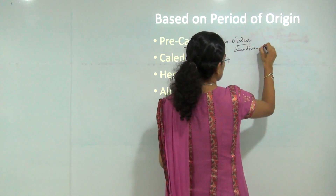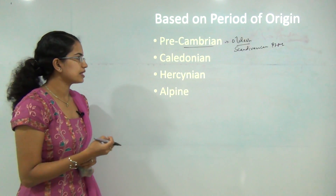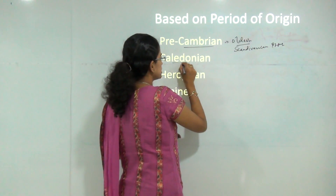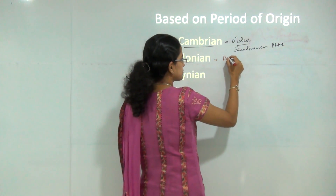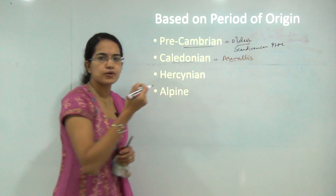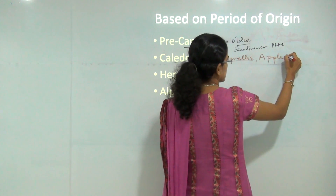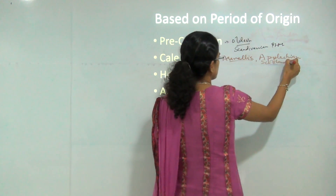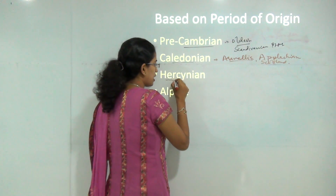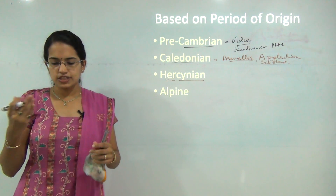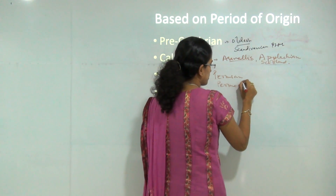The Caledonian era includes mountain ranges like the Aravallis, one of the common mountain ranges found in the desert region of Rajasthan, the Appalachians, and the Scotland area. These would be included under the Caledonian mountain range system. Next, you have the Hercynian mountain system, which lies between the Permian and Permo-Carboniferous period.